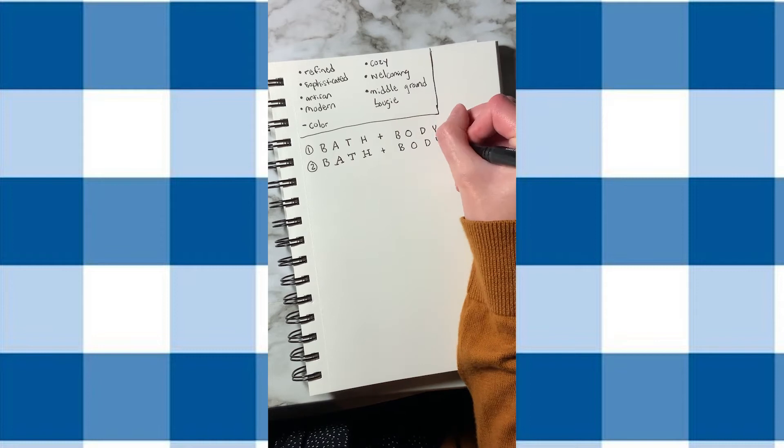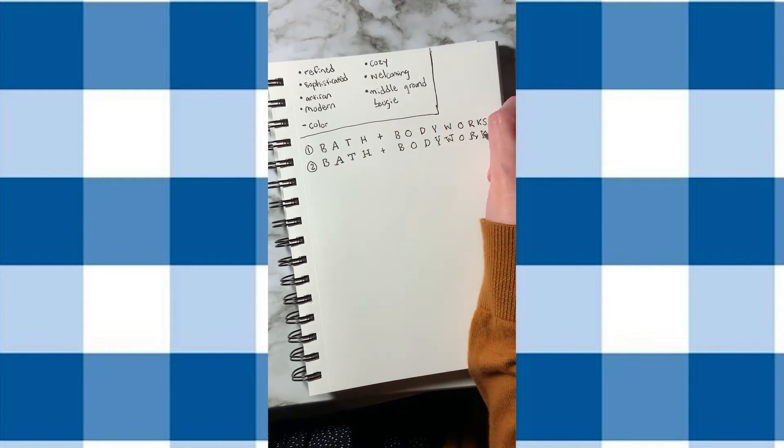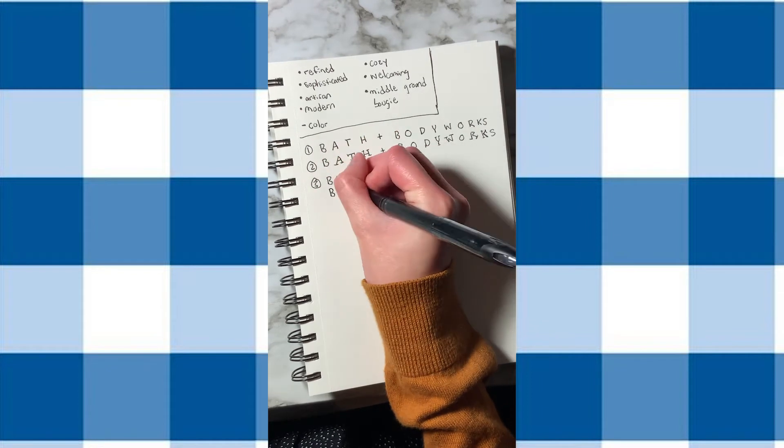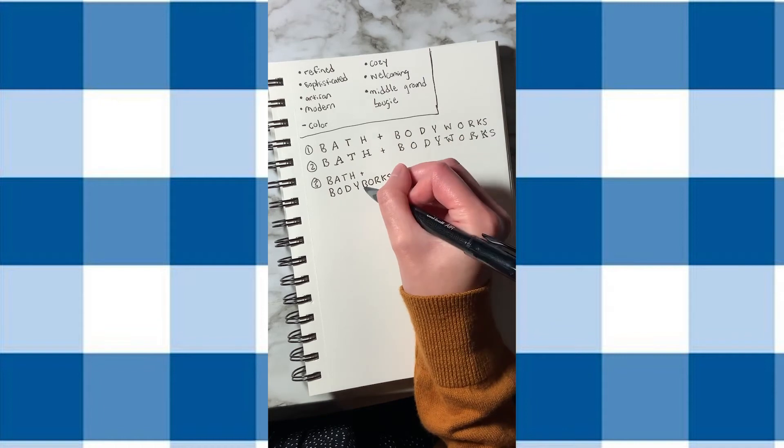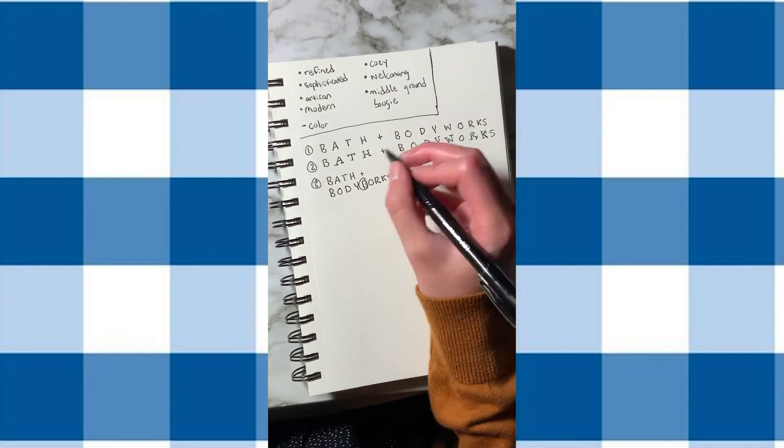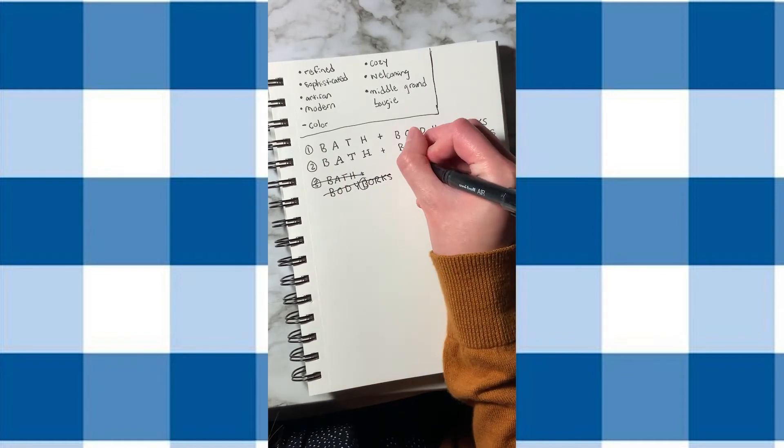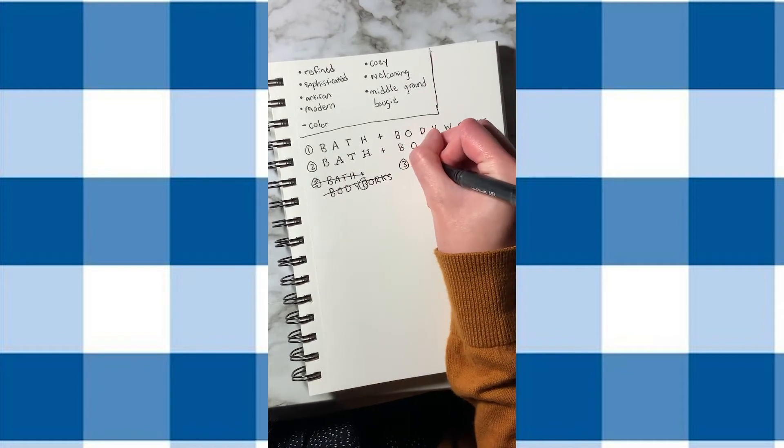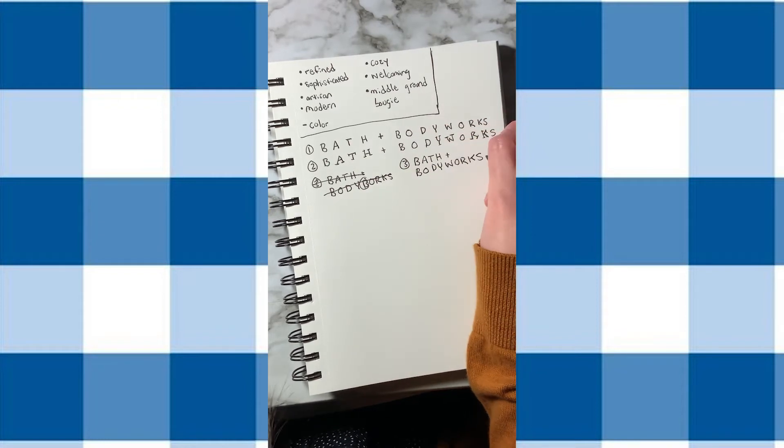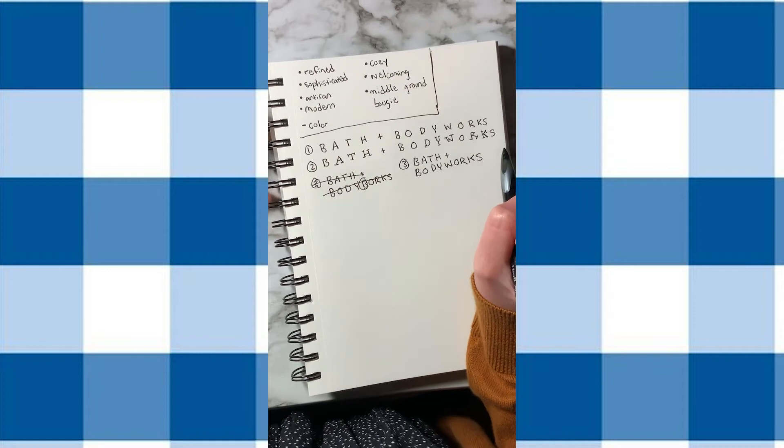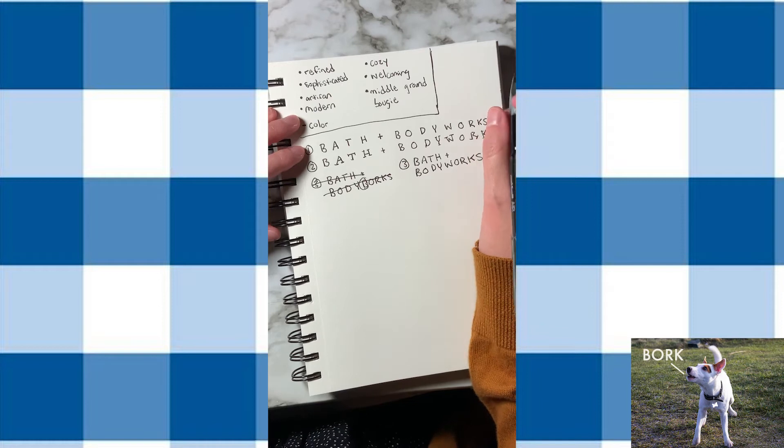And then over here, I'm trying out with maybe if there were serifs on the font instead of the sans serif. What was that? What is this? Body porks. No, that is not what I meant. Okay, I don't know where that came from. We're just gonna fix that. It kind of sounds like something for like a dog? Something to do with dogs, like a grooming company for dogs. I don't know.